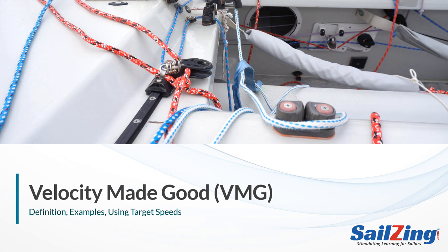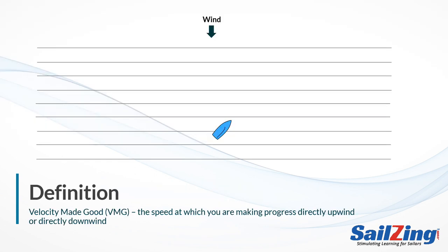If you prefer reading about this subject, go to SailZing.com for an outline version of this video. Let's start with the definition of velocity made good. It simply means the speed at which you are making progress directly upwind or directly downwind.